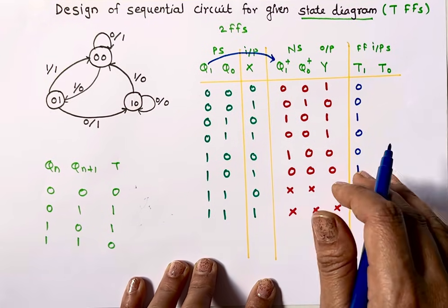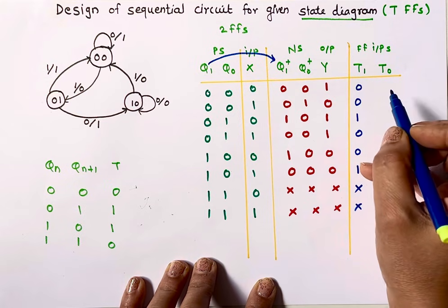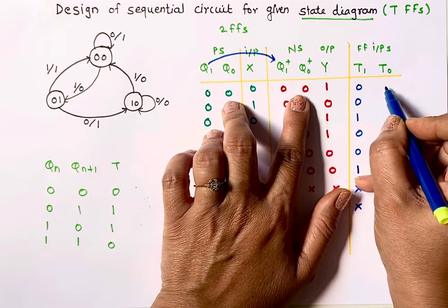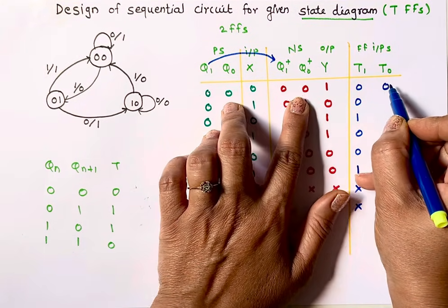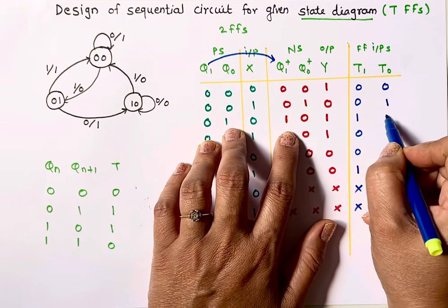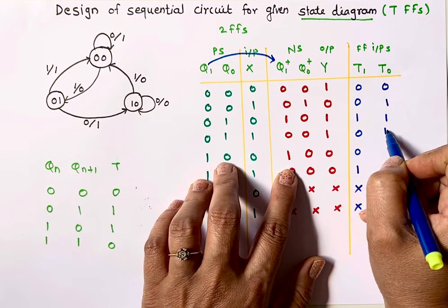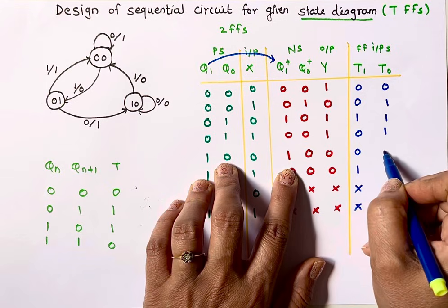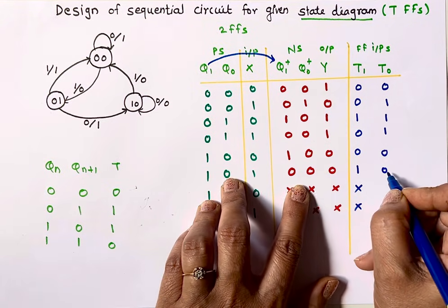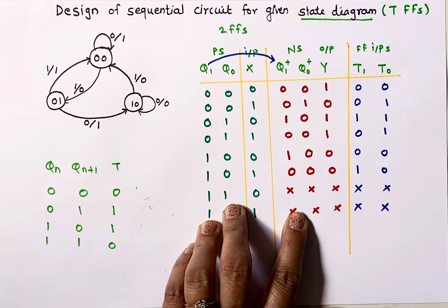For T0 I will compare Q0 with Q0+. The values are: 0→0 gives T0=0; 0→1 gives T0=1; 1→0 gives T0=1; 1→0 gives T0=1; 0→0 gives T0=0; 0→0 gives T0=0; and then don't care, don't care for the last two rows.